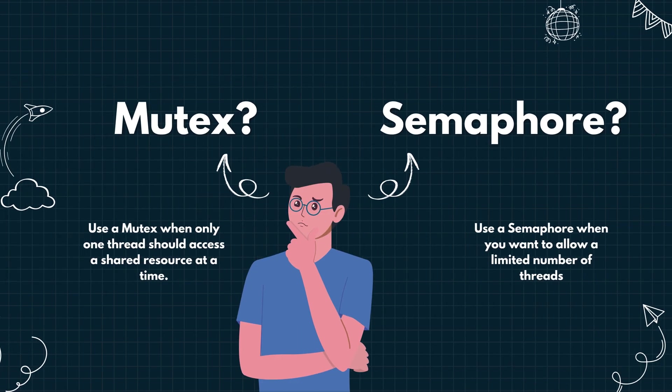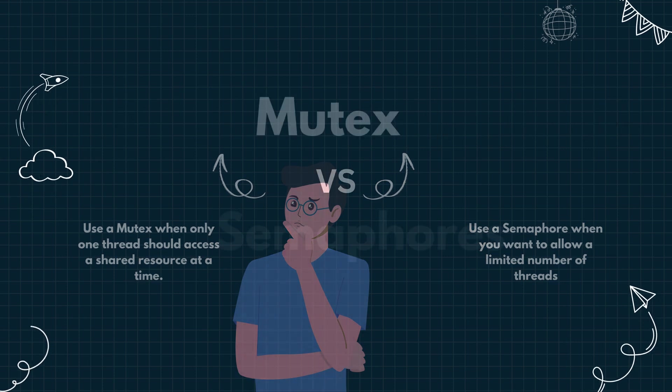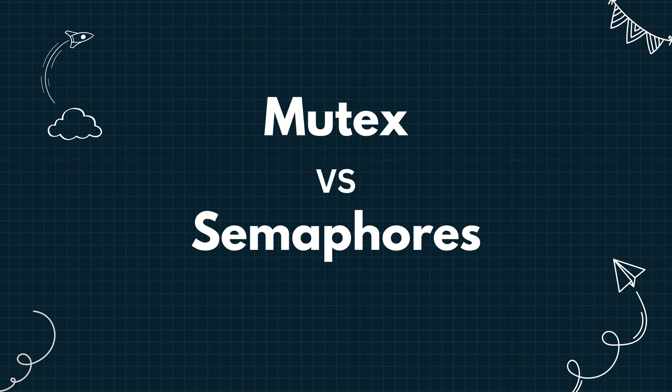So to recap: use a mutex when only one thread should access a shared resource at a time. Use a semaphore when you want to allow a limited number of threads — like 3 or 5 — to access something concurrently. Both help you avoid race conditions but in different ways. Have you ever used a mutex or semaphore in your code, or faced any issues with concurrency? Let me know in the comments — I'd love to hear about how you handled it. Thank you.